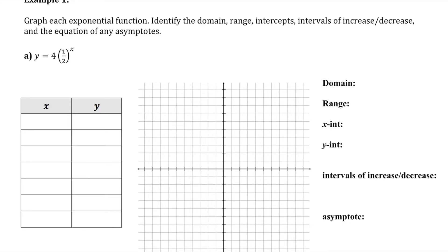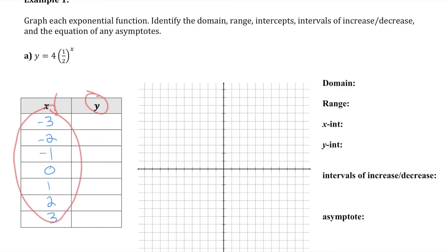For my independent variable x, I will choose x values from negative three to three because I know that will give me a good representation of the shape of this exponential function. I can then calculate the y values by taking each of these x values and substituting them in for x in the exponential equation and that will tell me the value of y.